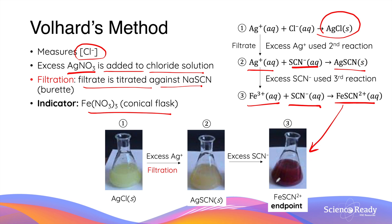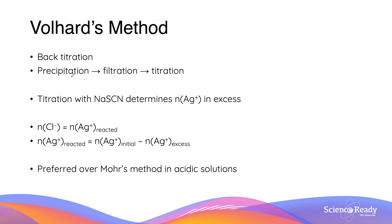A major difference between Vohar's and Mohr's method is that this is an example of a back titration. The method starts with precipitation between silver and chloride ions, followed by filtration to obtain the filtrate which contains excess silver ions. This is then titrated with thiocyanate and the titer volume is recorded.